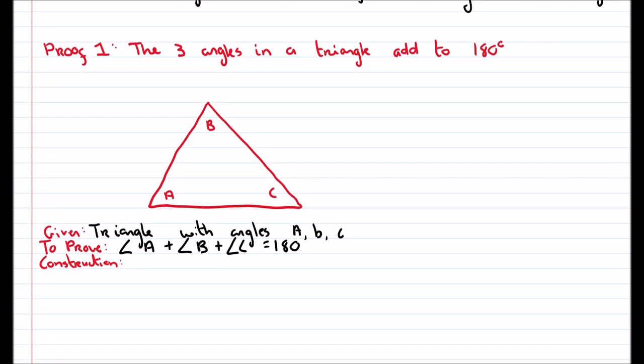Ok, so here's proof one: the three angles in a triangle add to 180. In the exam they'll have it set up for you — they'll have a space for you to draw the triangle, and then they'll write the headings: given, to prove, construction, and proof. You must write what's required. So first, you'll draw a triangle and label it A, B, and C.